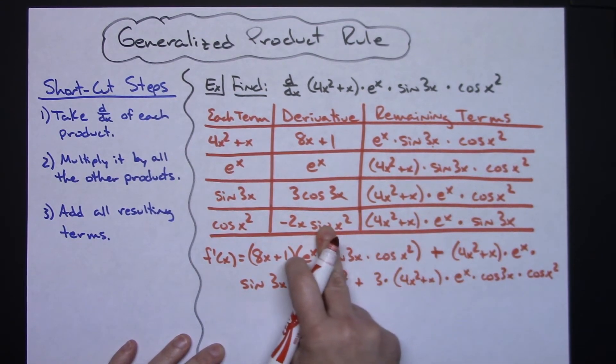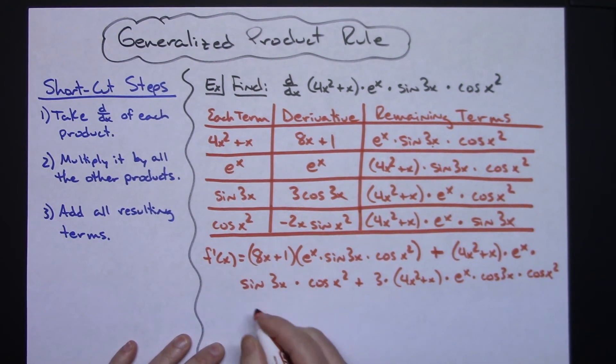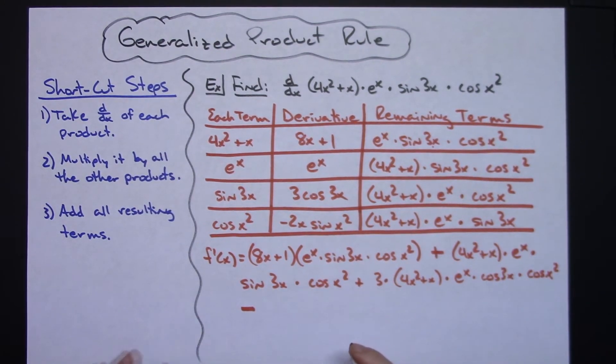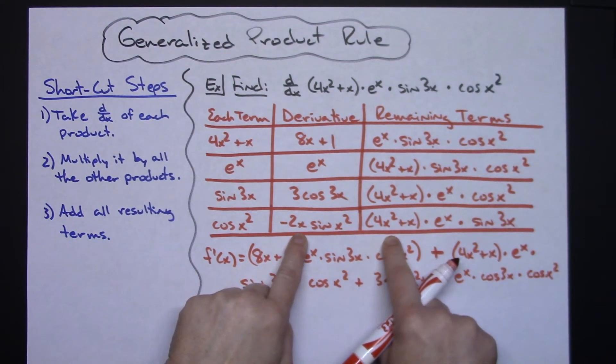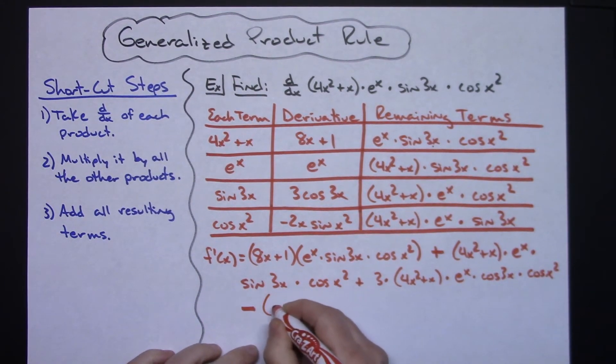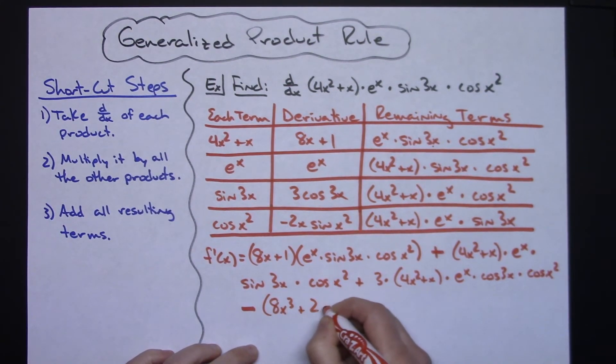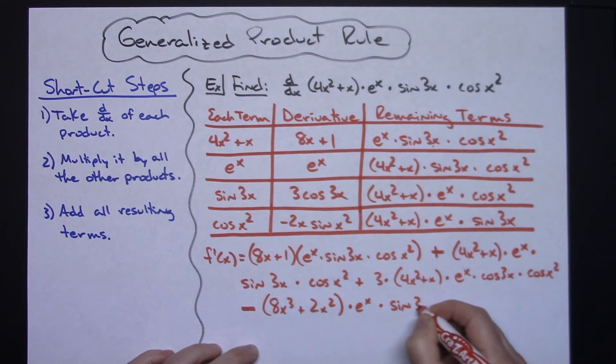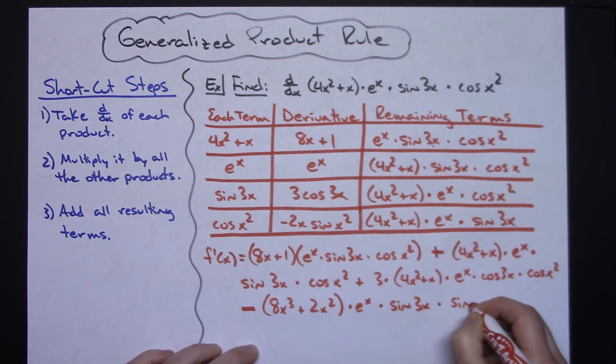And then this one times this one. And it is a negative here, so the last one will be minus. And then multiplying all this together again. Let's see if I multiplied here by the 2x and distributed that. Then I could have 8x to the 3rd plus 2x squared, and then times e to the x times sine 3x times sine x squared.